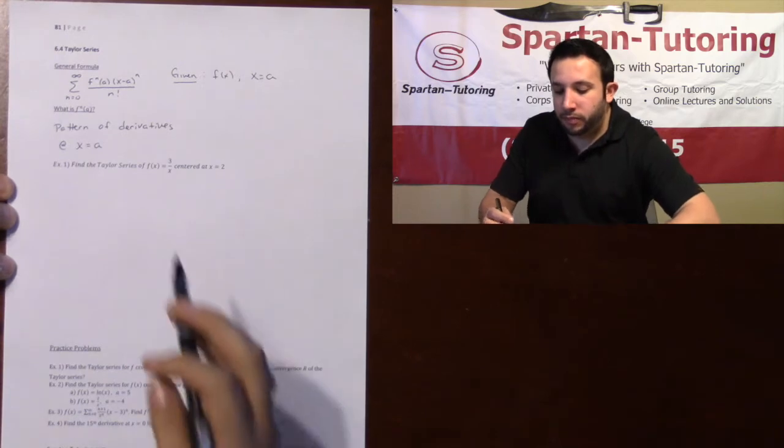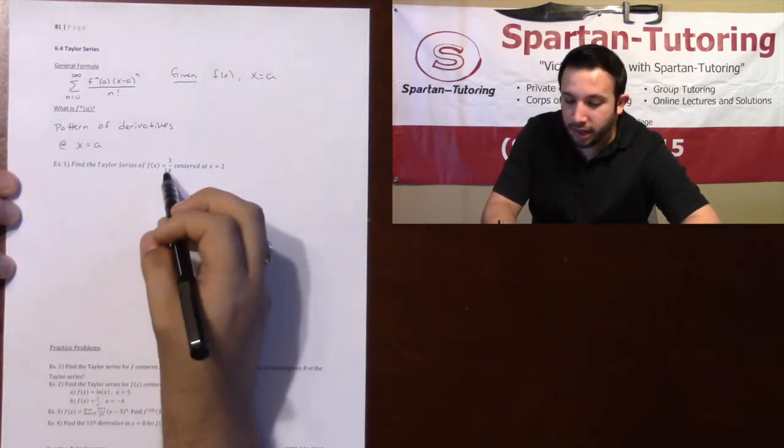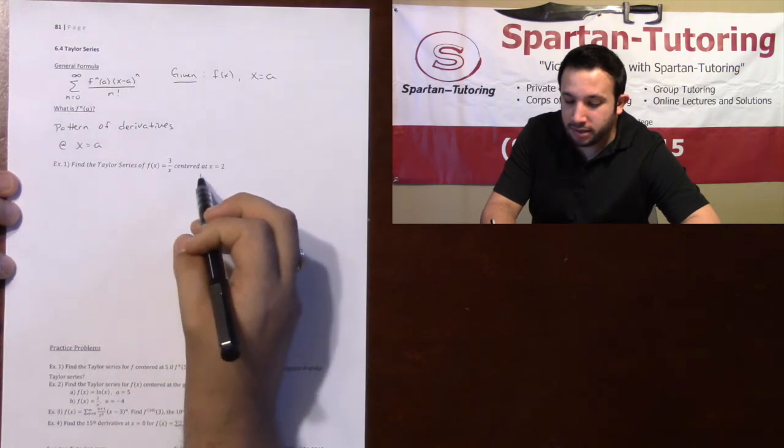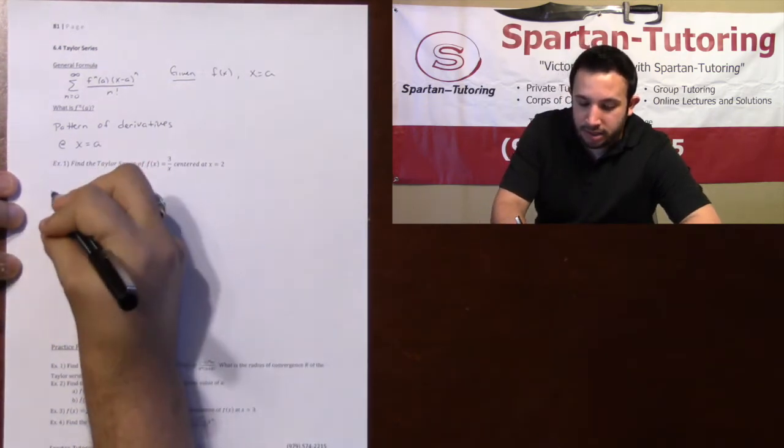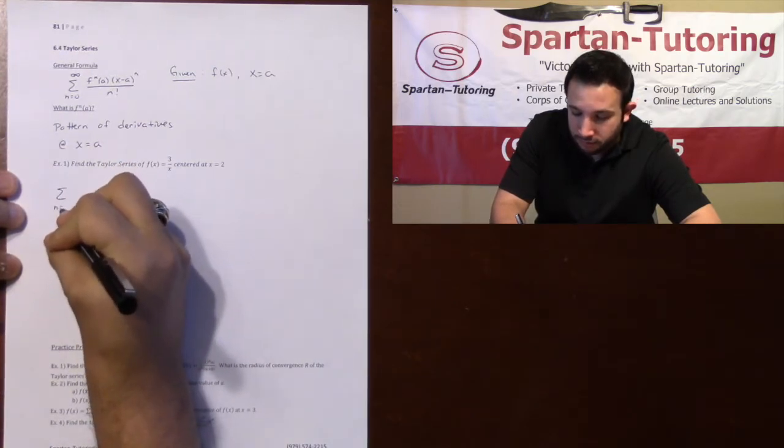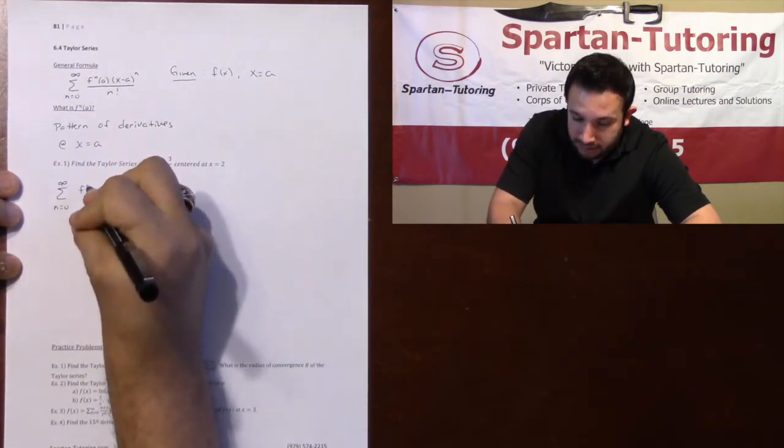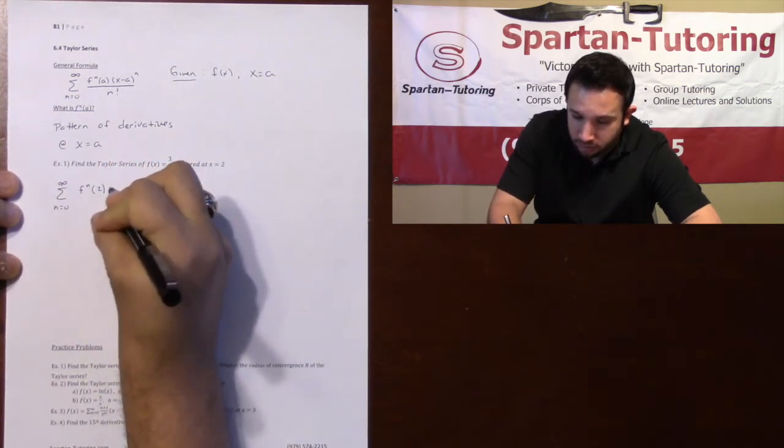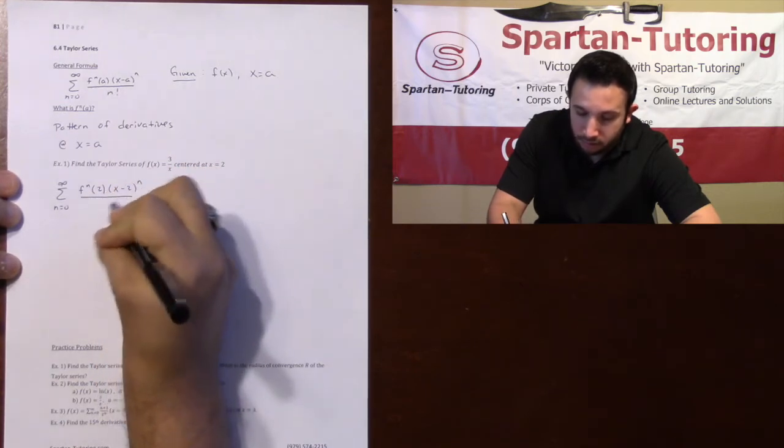So let's go through a problem. Taking a look at this, this is find the Taylor series for the function f of x equals 3 over x centered at x equals 2. So the first thing I'm going to do is write out my general formula. So this is going to be the sum from n equals 0 to infinity of f to the n of 2 times x minus 2 to the n over n factorial.